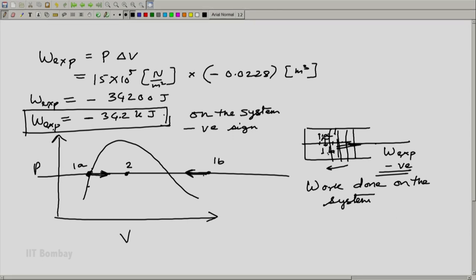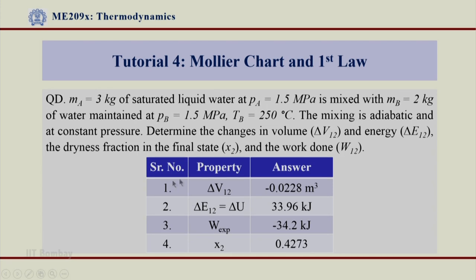Answer to the entire question now is, we got delta V12. As a result of this mixing, we had reduction in volume minus 0.0228 meter cube. We had delta E12 approximated as delta U12, which is 33.96 kilojoule. W expansion work is negative minus 34.2 kilojoule. And we found that at state 2, which is a wet steam, we got x as 0.4273. This is the dryness fraction of the wet steam at state 2, what we got as a result of this mixing phenomena.